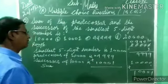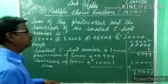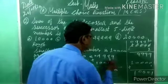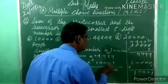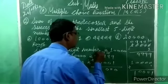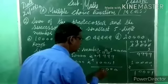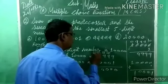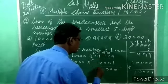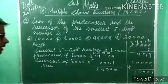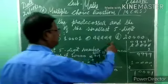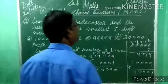Now do addition — sum of predecessor and successor: nine thousand nine hundred ninety-nine plus ten thousand one. Nine plus one is ten, carry one; nine plus one ten, carry; nine plus one ten, carry; nine plus one ten, carry; one plus zero one; one plus one two. Answer is twenty thousand. Option D. Put right for D.